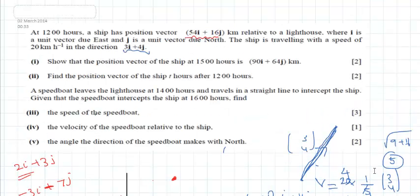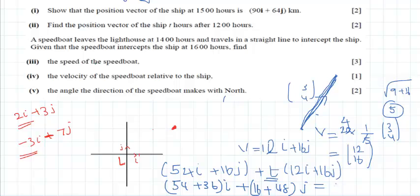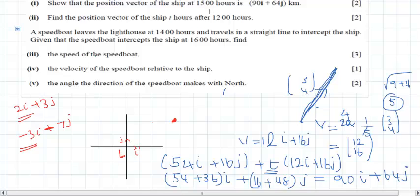Part one asks us to show that after 3 hours the position is 90i plus 64j. After 3 hours, starting at 12 hours means t equals 3. Substituting: 54 plus 3 times 12 equals 54 plus 36 equals 90 for the i component, and 16 plus 3 times 16 equals 16 plus 48 equals 64 for the j component. This gives 90i plus 64j. Hence proved — after 3 hours the ship is at position 90i plus 64j from the lighthouse.